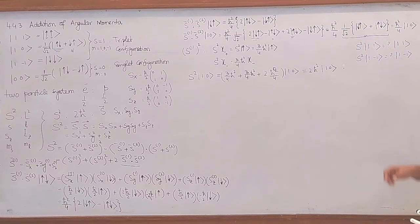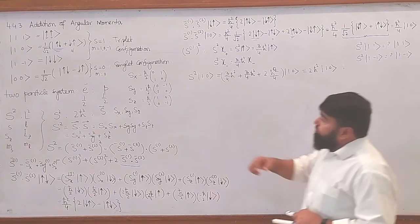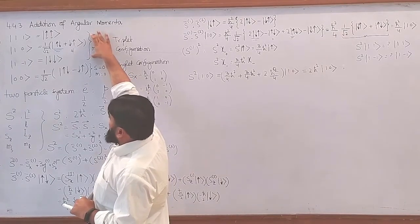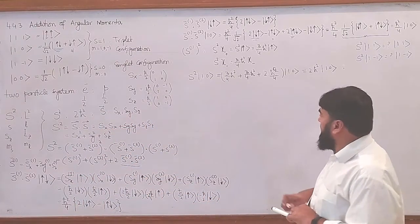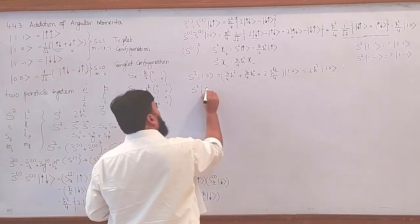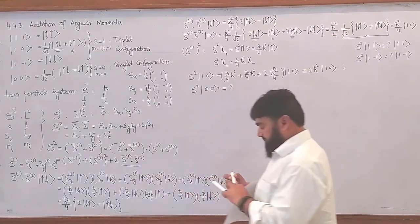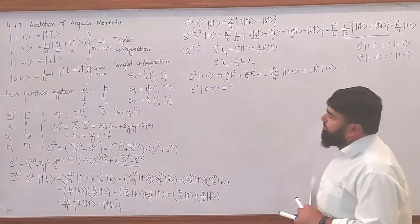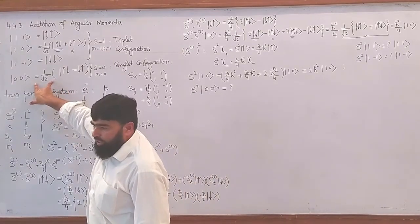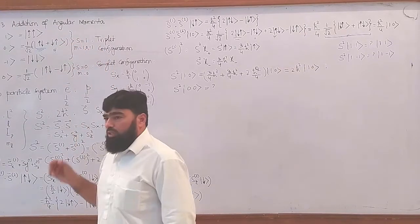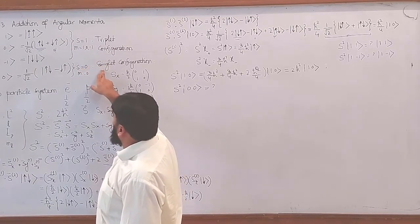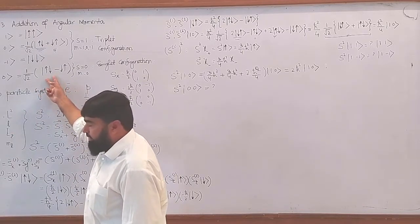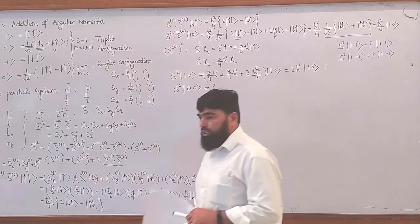If you have any difficulty calculating this, you can discuss with me. Now, all three states — the triplet states — we have calculated. What about the singlet state? What will be the result for |0,0⟩? The first question is: will this be an eigenfunction of S²? All the states in the triplet configuration are eigenfunctions of S². Whether the singlet state — the one remaining configuration — will be an eigenfunction of S²?